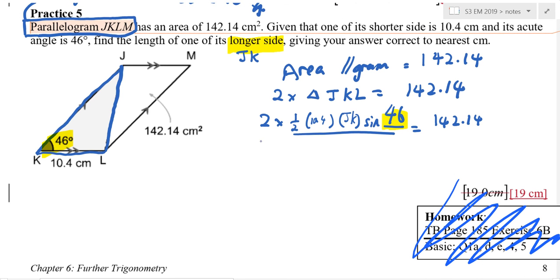Now let's try. Press everything here in the calculator. What do you get? 10.4, this is 10.4 right? Times JK times sine 46 equals to 142.14. Can you find JK?